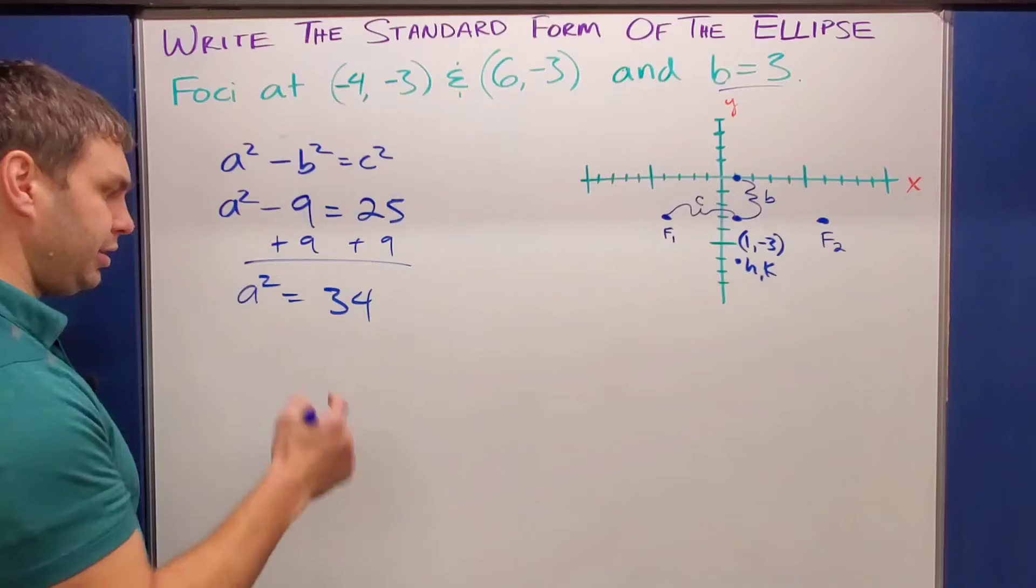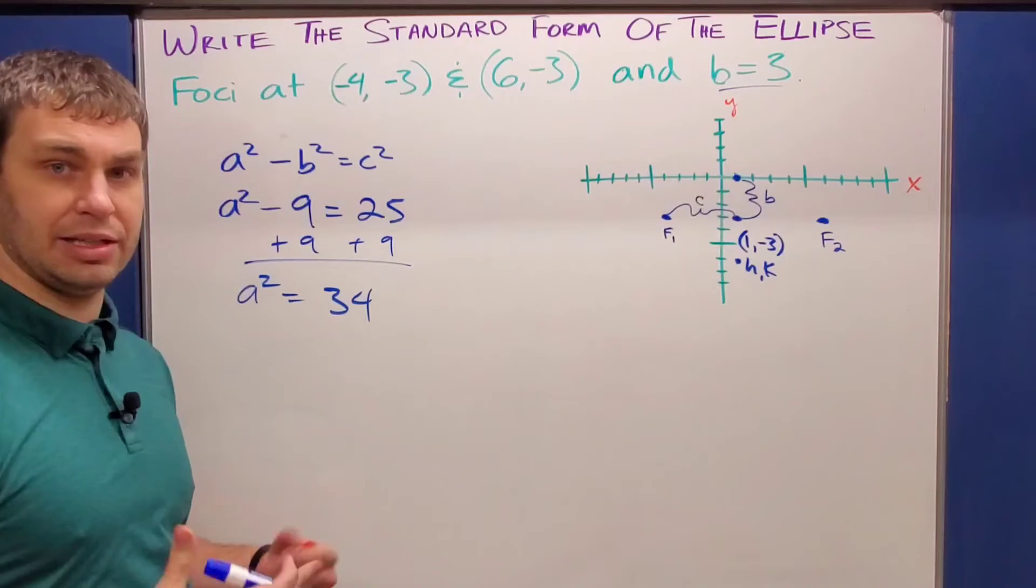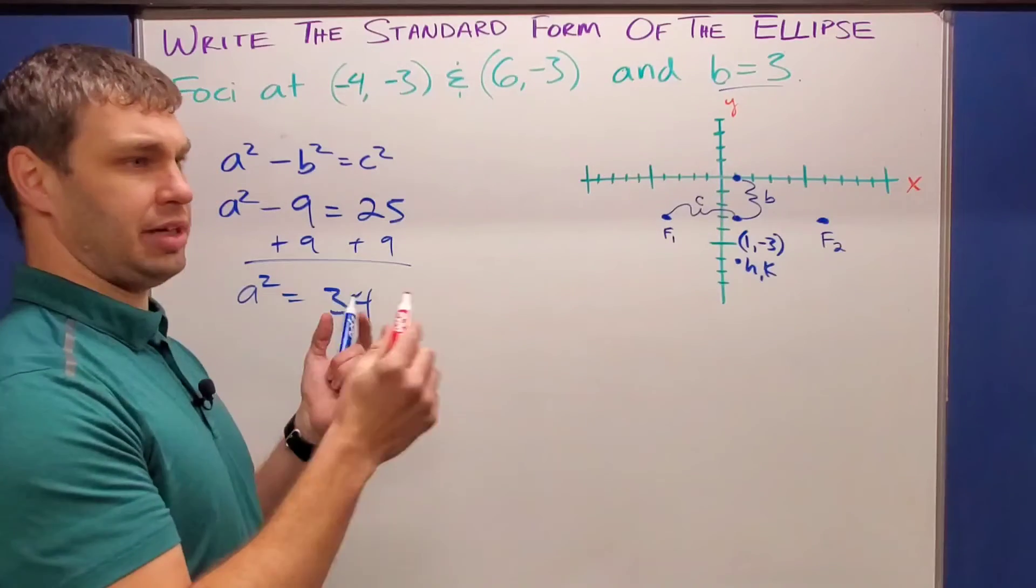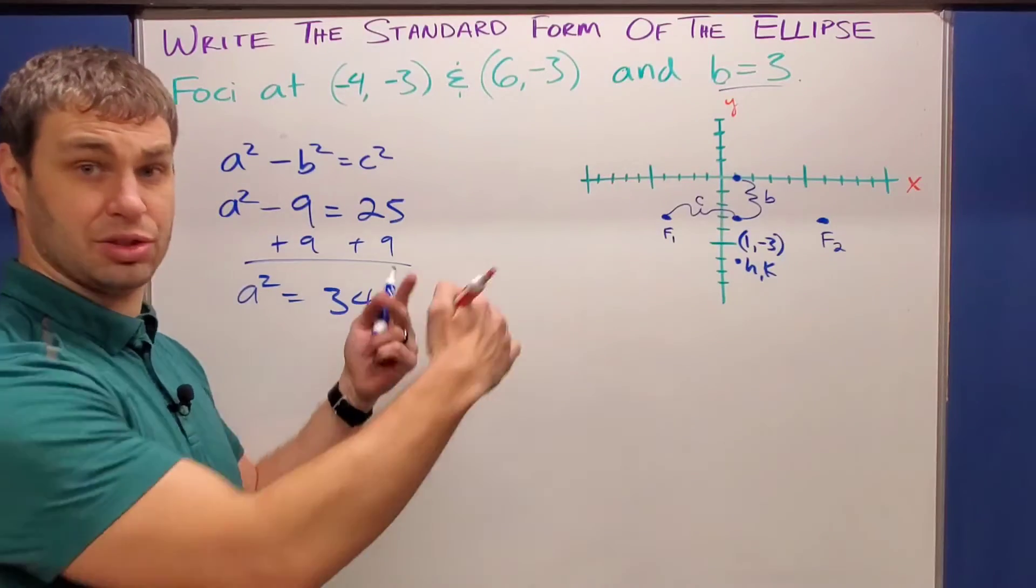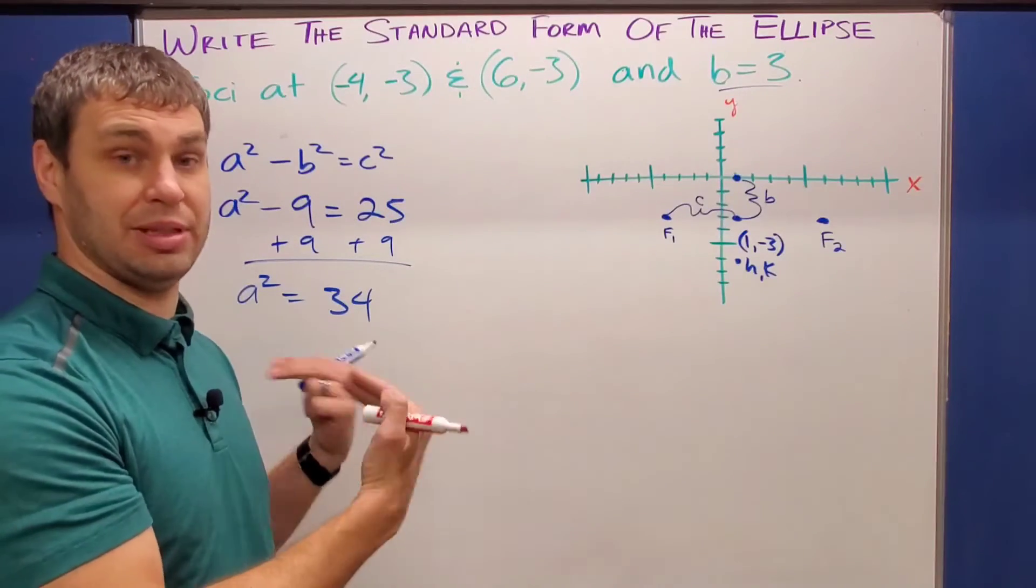Okay. And really you don't have to find just A. You can just leave this as A squared because remember our standard form has our two X minus H, Y minus K values over A squared and B squared, right? Not just A and B, but A squared B squared.